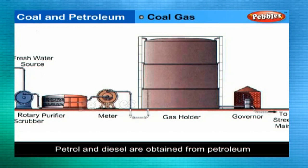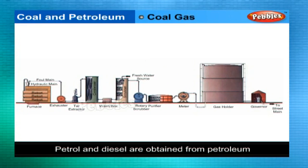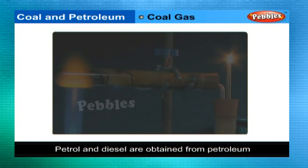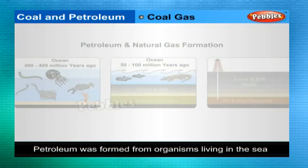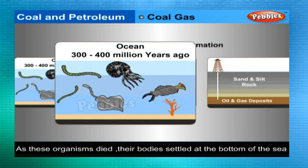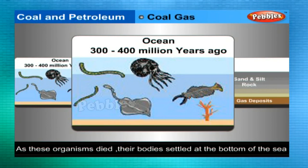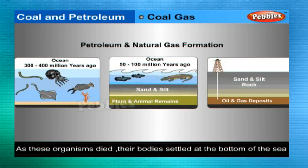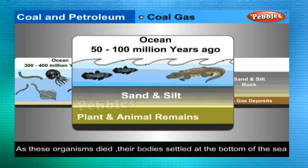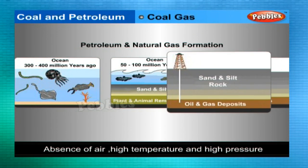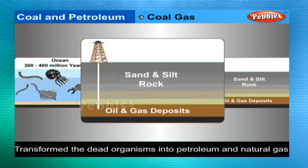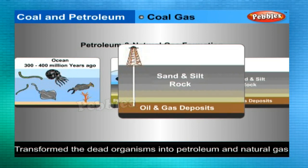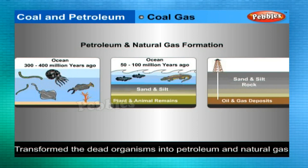Petroleum: Petrol and diesel are obtained from a natural resource called petroleum. Petroleum was formed from organisms living in the sea. As these organisms died, their bodies settled at the bottom of the sea and clay. Over millions of years, in the absence of air, high temperature and high pressure transformed the dead organisms into petroleum and natural gas.